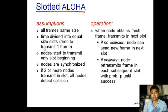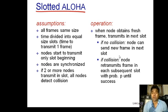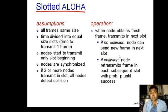In the operational part: when a node obtains a fresh frame, it starts transmitting that frame at the beginning of the time slot. If there is no collision, the node can send a new frame in the next time slot. If there is a collision, the node retransmits the frame in each subsequent slot with probability p until it gets a successful transmission.